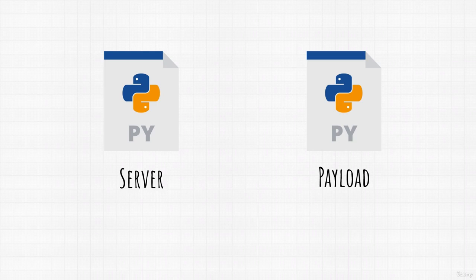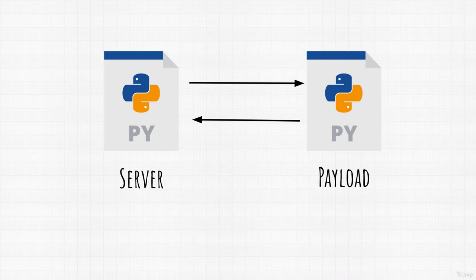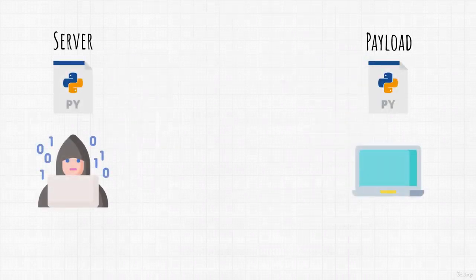What will happen is they will communicate between one another, and from the server, we will be sending our instructions that we want our target to execute. Then the payload will send us back an output. So it would pretty much look something like this: the Kali Linux machine is running the server program, and the target is running the payload, or our backdoor.